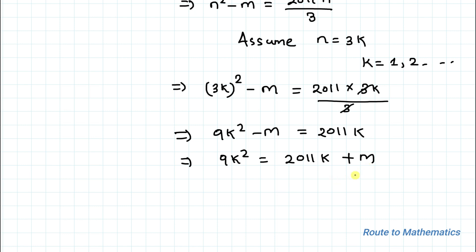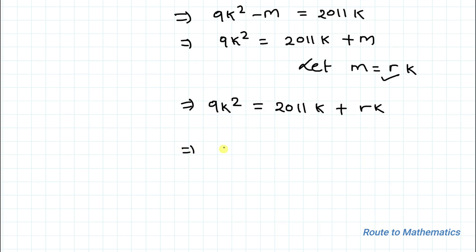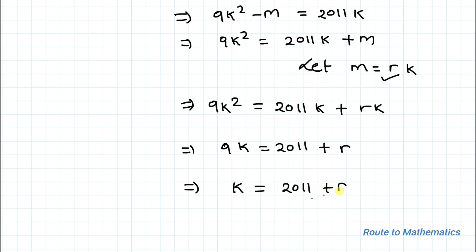In order to satisfy the equation, m must also be divisible by k. So let's set m equals rk. Substituting, we get 9k² equals 2011k plus rk. Taking k as a common factor, 9k equals 2011 plus r.